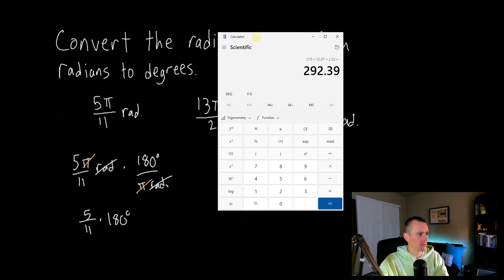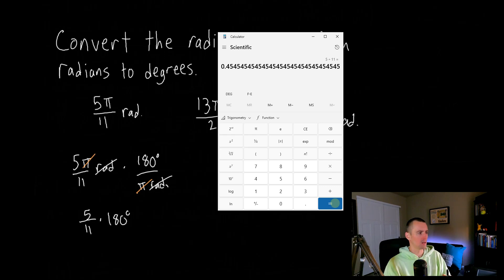And then we're just going to be left with 5 over 11 times 180 degrees. So basically that'll just leave us with 5 over 11 times 180 degrees. From there, we could pretty much just type that into a calculator and see what that actually gives us. So if we were to do that, I'll actually just bring my calculator over here. So if we take 5 divided by 11, and then times that by 180, that leaves us with 81.818 degrees.